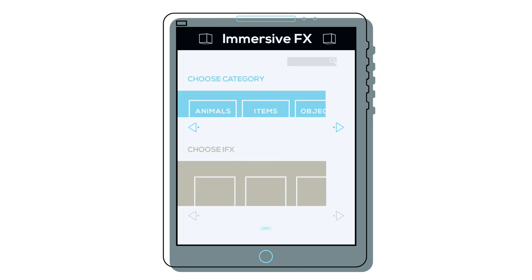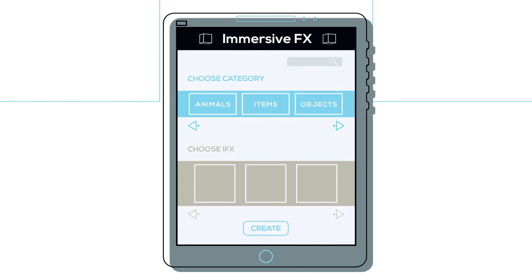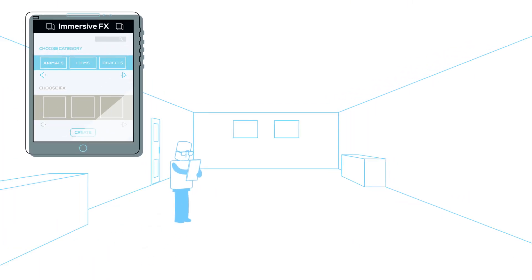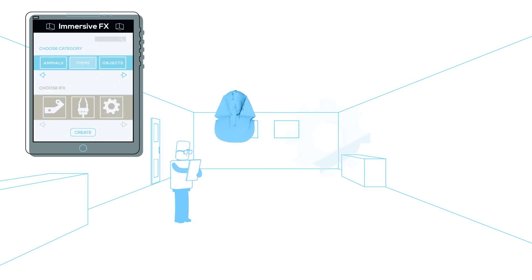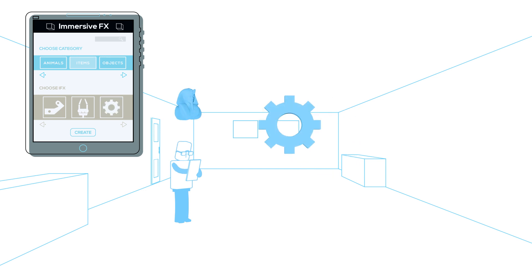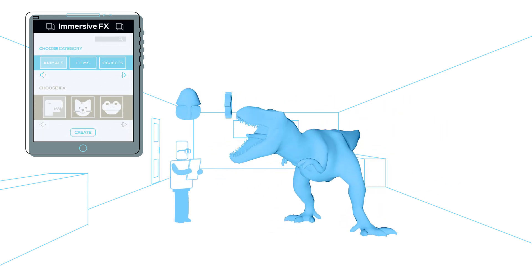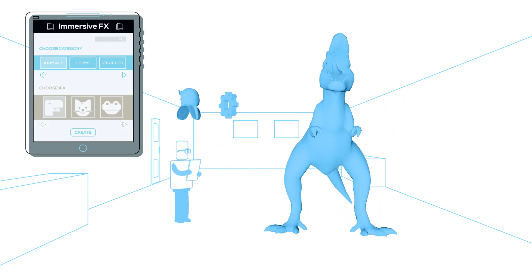Engage educators can create unique lessons using our immersive effects system, allowing them to teleport a wide range of 3D objects from our immersive library — such as historic objects, mechanical items, and even animals — directly into the virtual classroom for students to interact with.